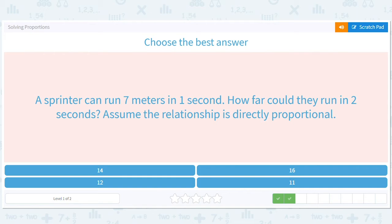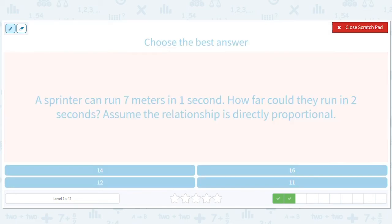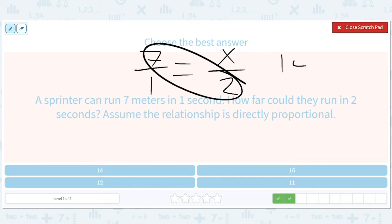So a sprinter can run seven meters in one second. How far could they run in two seconds? Okay, I won't be lazy this time. So seven meters, one second. How far? Two seconds. Cross multiply. 14 equals x. So 14 meters.